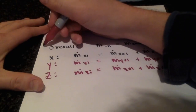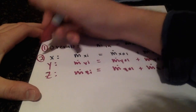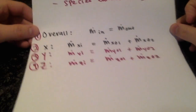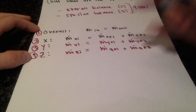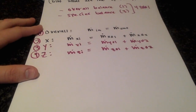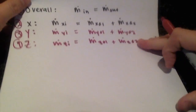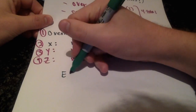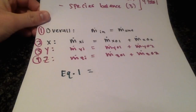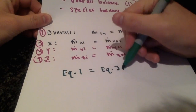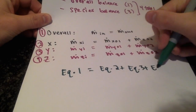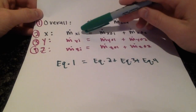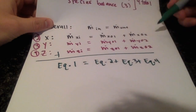Counting off these equations we have: one overall equation, two, three, and four. Now here's why we only have three independent equations. Although we have four equations, only three are independent because if you take any three of them, the fourth can be written in terms of the others. For example, equation one equals equation two plus equation three plus equation four — the overall mass balance equals all the species balances summed together.